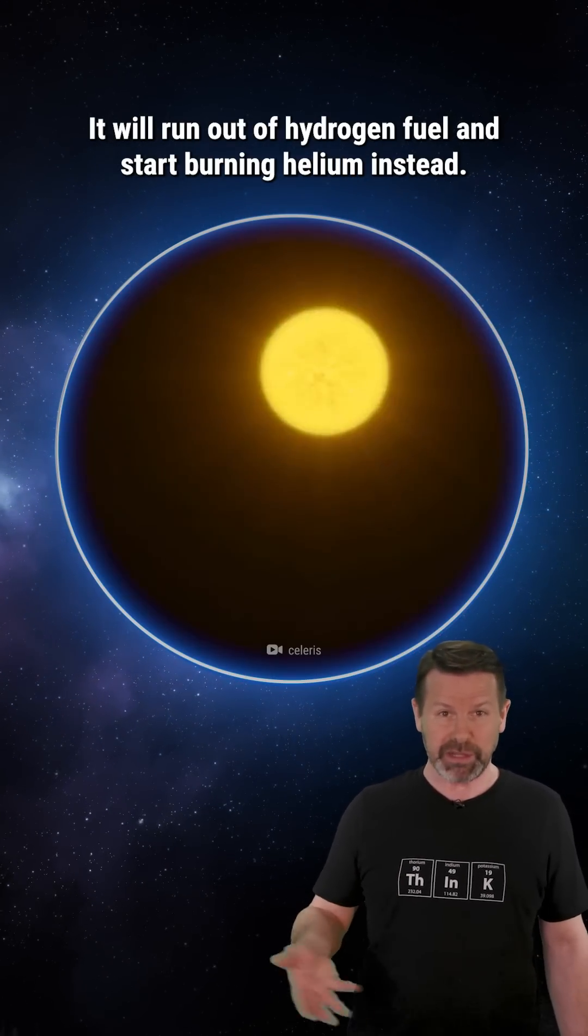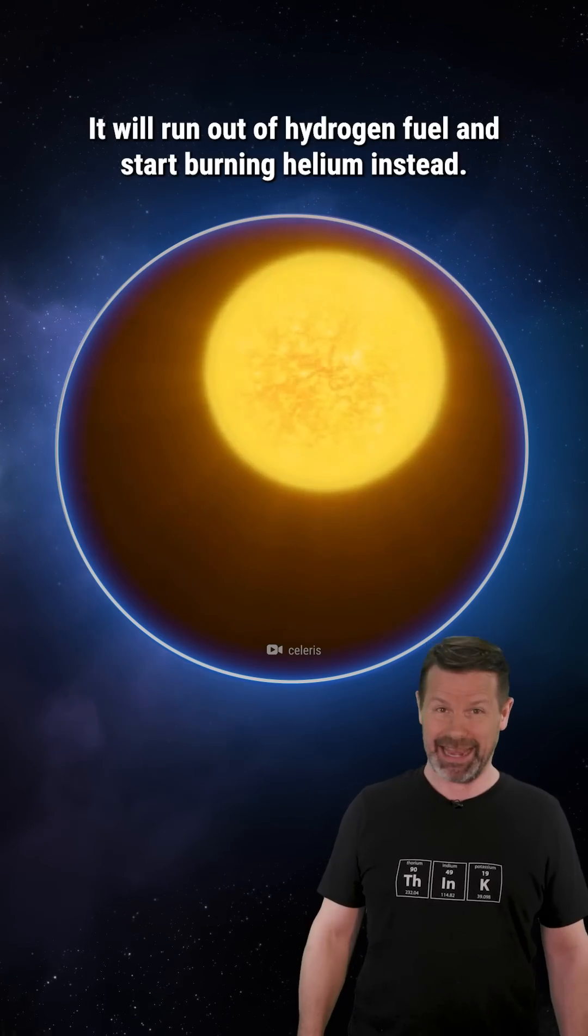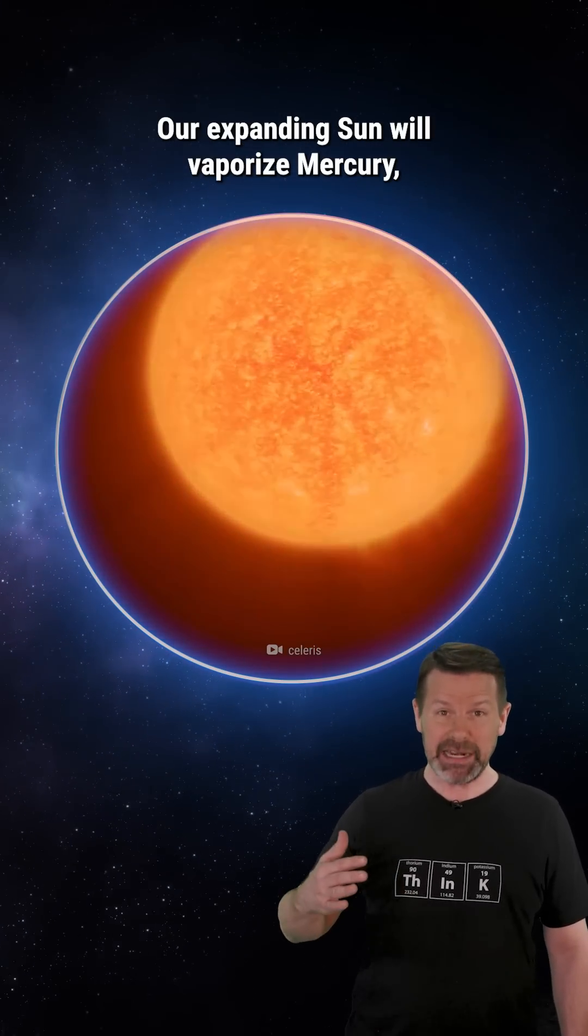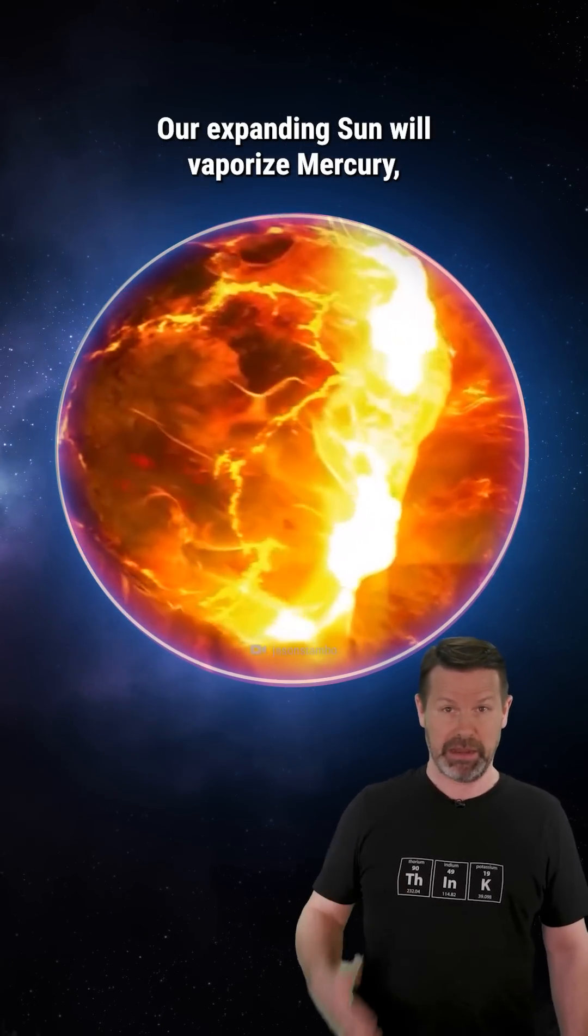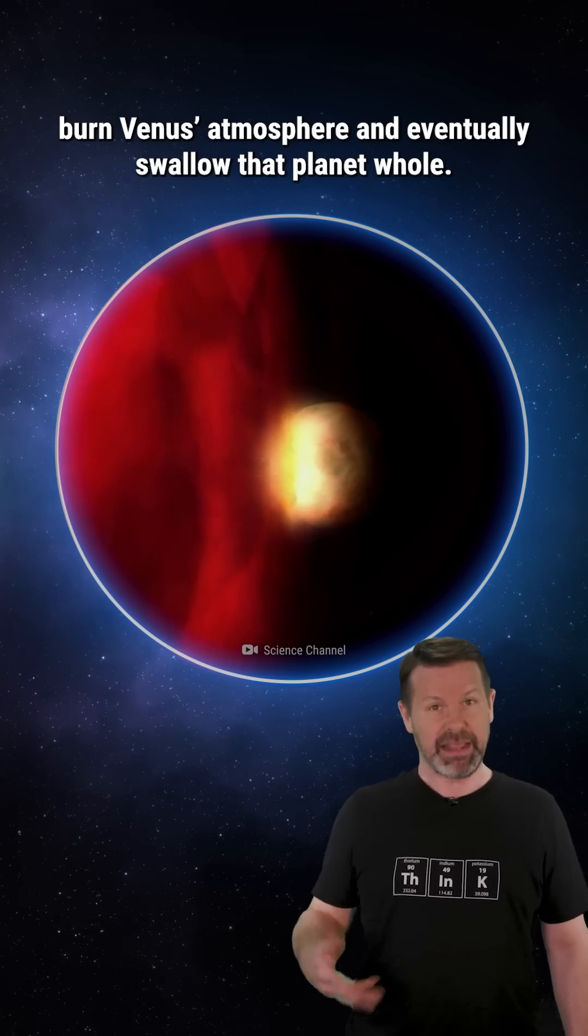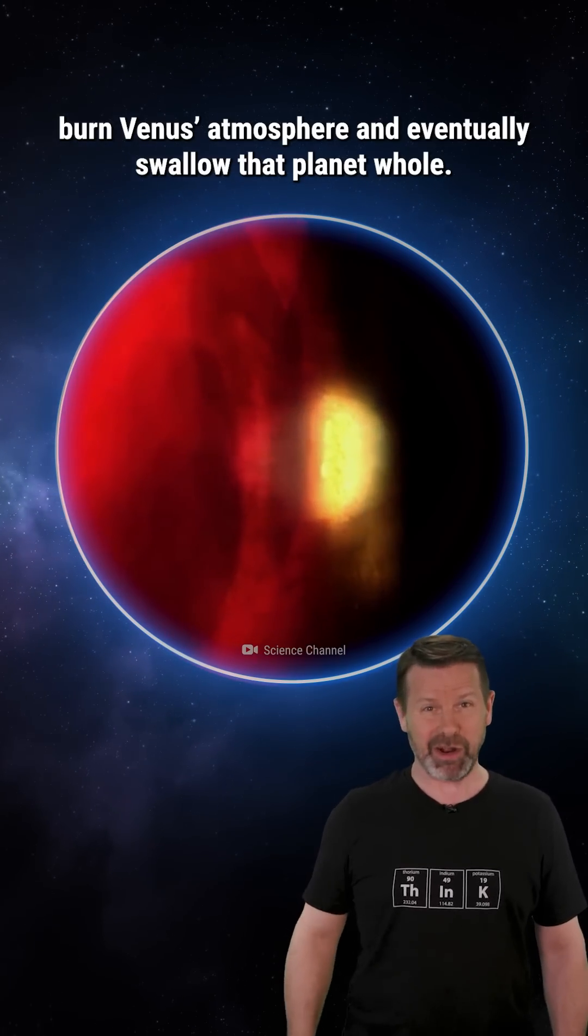It'll run out of hydrogen fuel and start burning helium instead. Our expanding sun will vaporize Mercury, burn Venus' atmosphere and eventually swallow that planet whole.